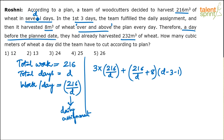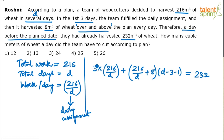Why d − 3 − 1? Total number of days required is d. They already worked for three days, so they will be doing the increased rate for the remaining d − 3 days. But we also know they finished the work one day before the planned date, so they took one day less — hence d − 3 − 1. And the total they did is not 216 but 232.